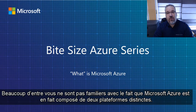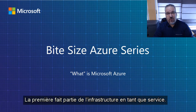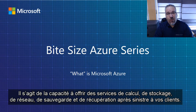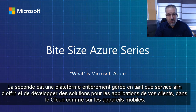Many of you are not familiar with the fact that Microsoft Azure is actually two distinct platforms. The first would be Infrastructure as a Service — it's the ability for you to deliver compute, storage, network, backup, and DR services to your customers.